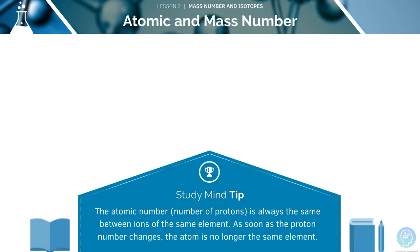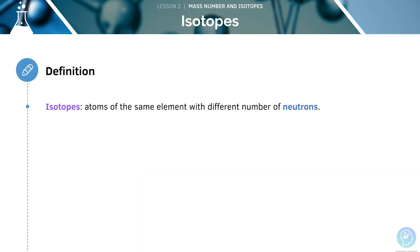The atomic number is the only number that stays constant between ions of the same element. The mass number can change. If two elements have different atomic numbers, then they are no longer the same element.